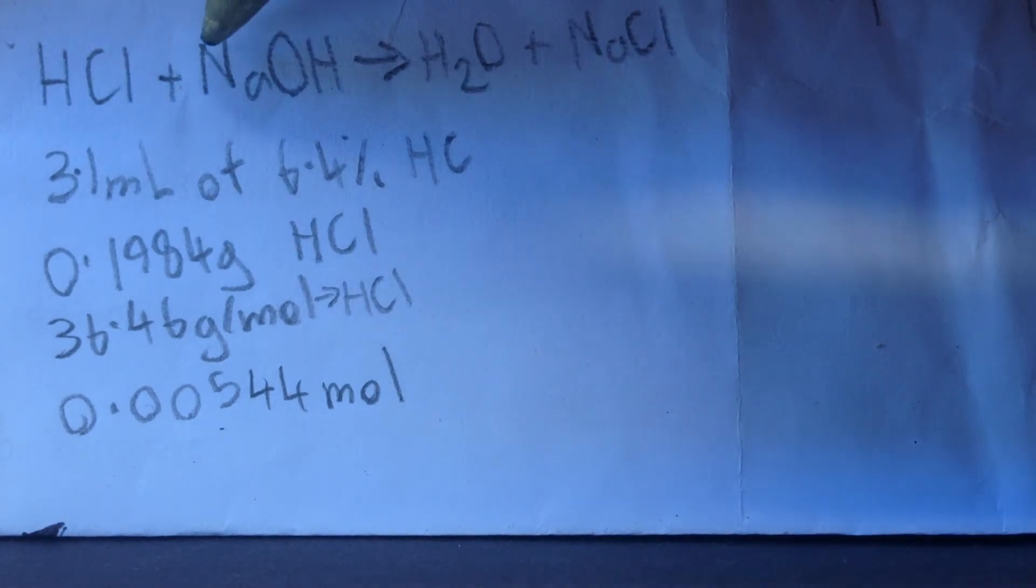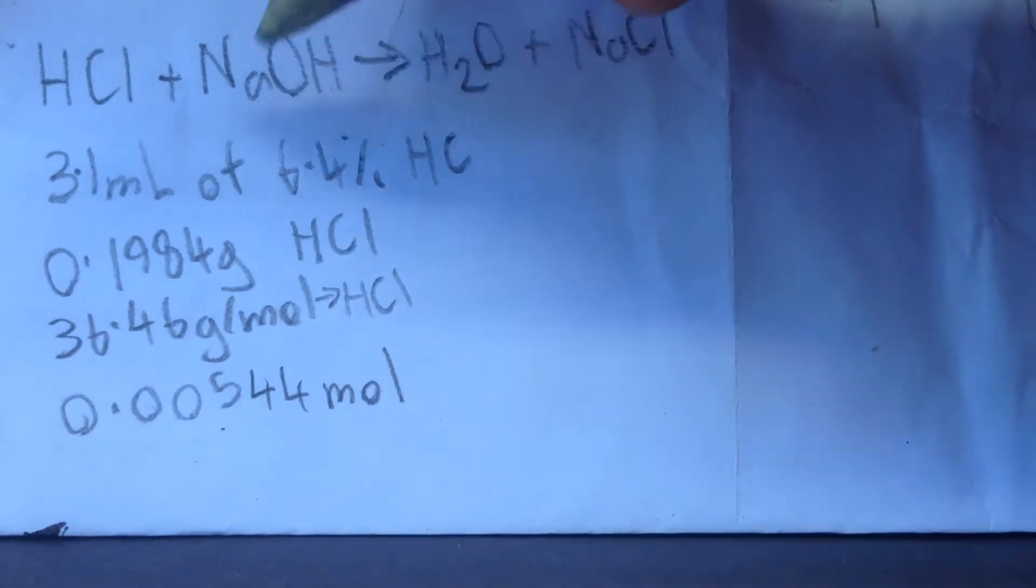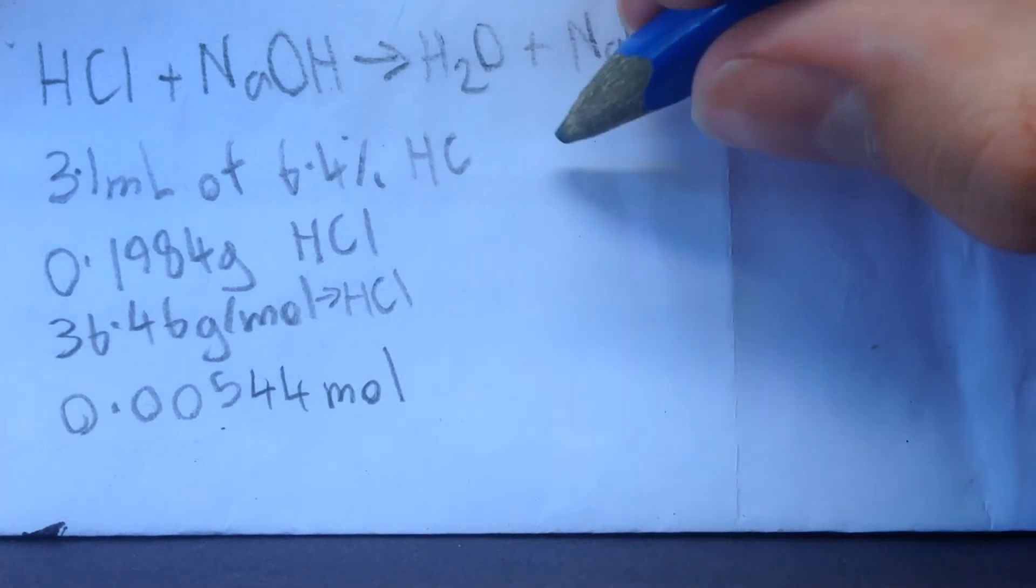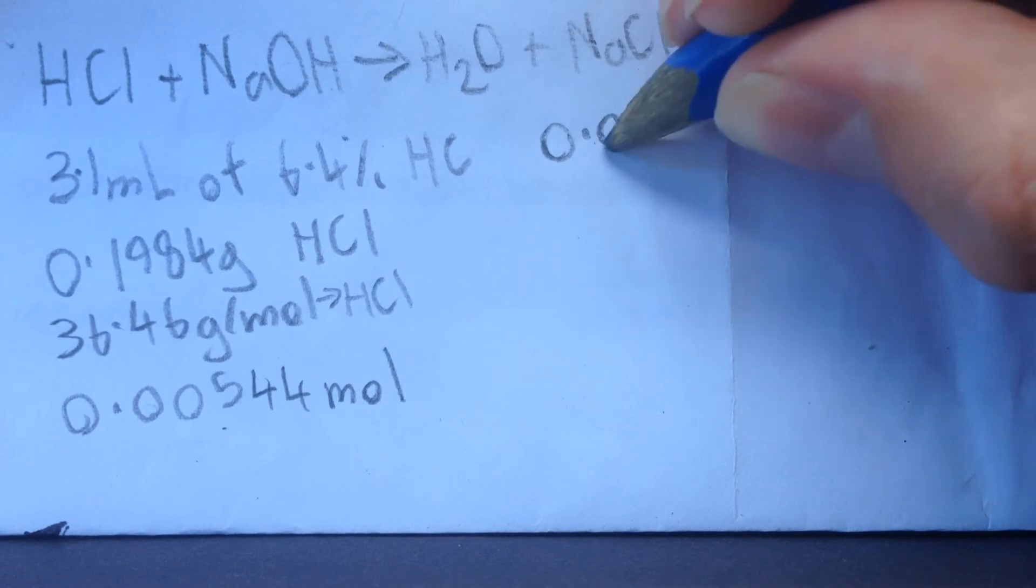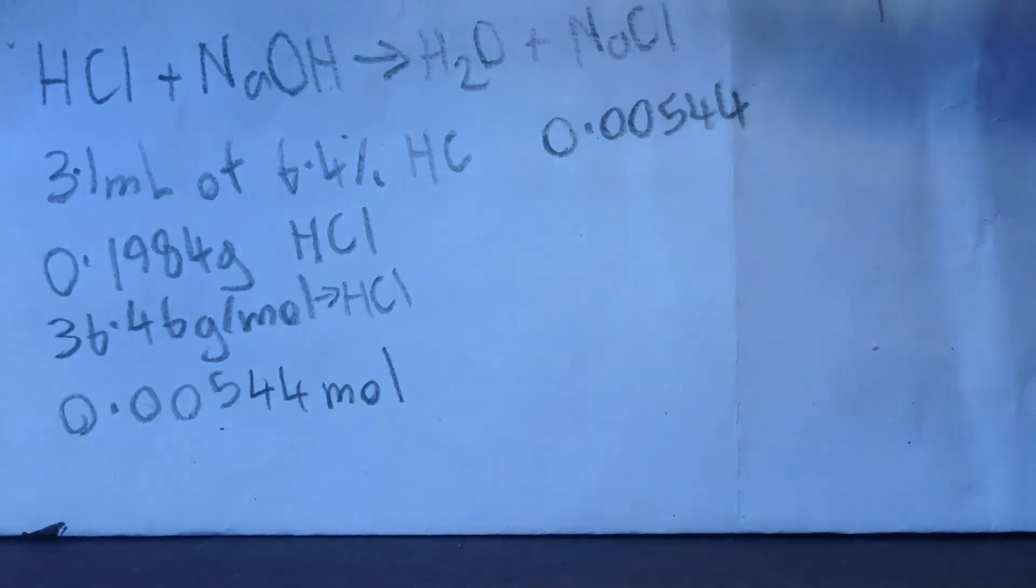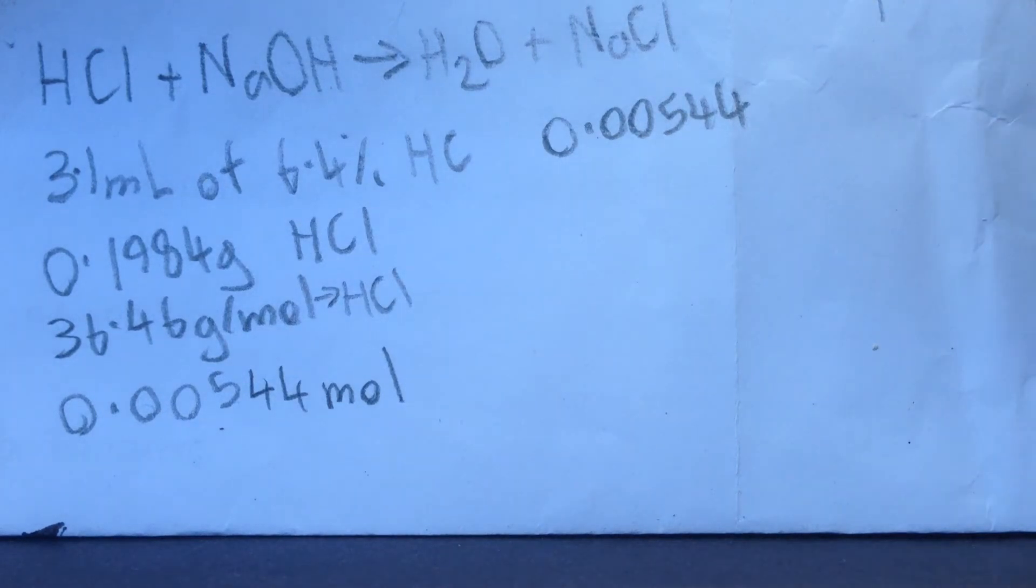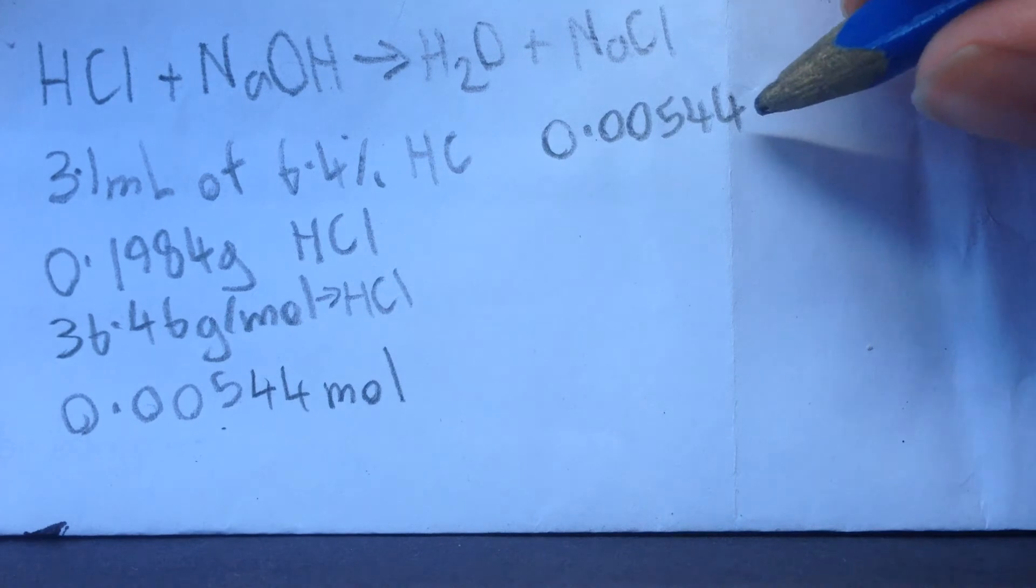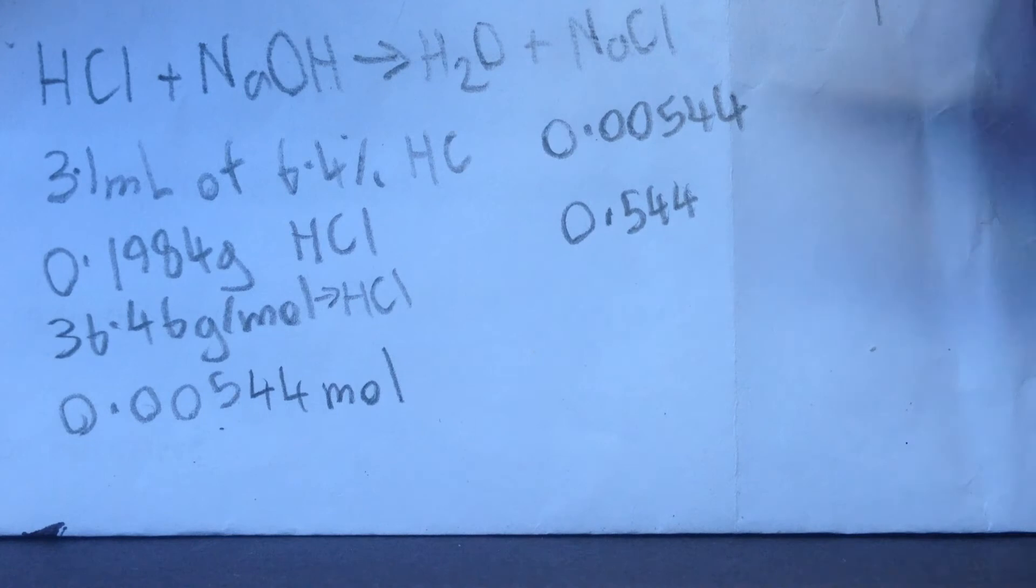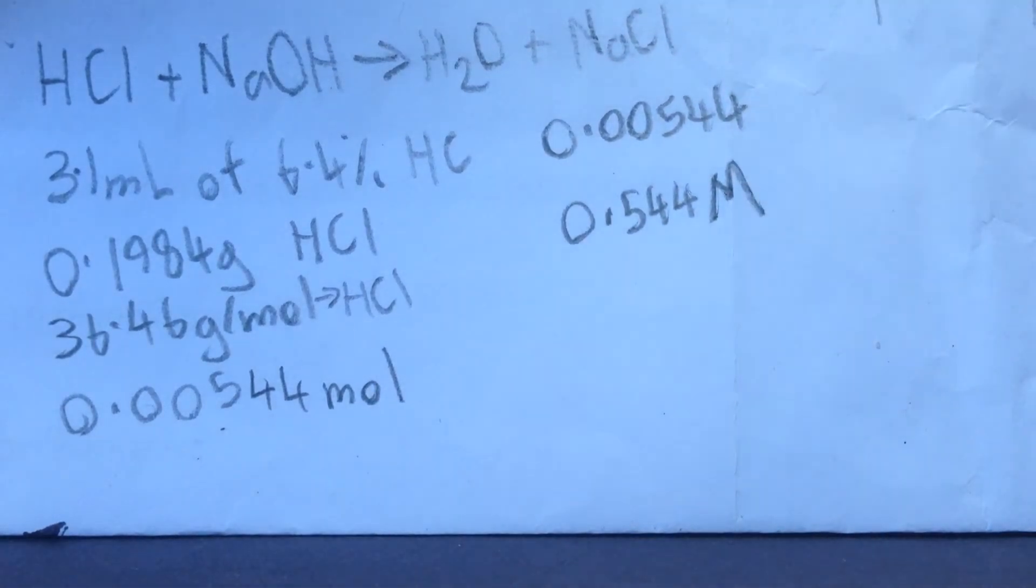And because we've got a 1 to 1 ratio between hydrochloric acid and sodium hydroxide, the concentration of, well, the number of moles of sodium hydroxide that we used was also 0.00544. And then because it was in 10 millilitres, which is 1 hundredth of a litre, we can multiply this by 100 and we get 0.544 molar solution of sodium hydroxide.